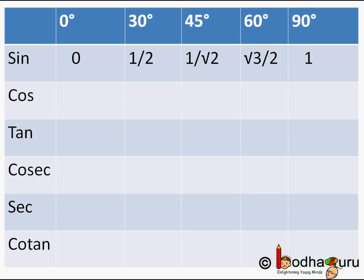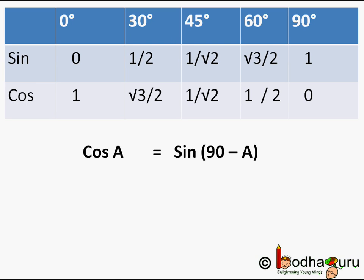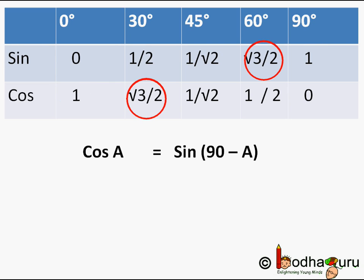Using the formula cos(a) = sin(90 - a), we can find the value of cos for all the various angles given sin. cos(0°) = sin(90 - 0) = sin(90°) = 1.